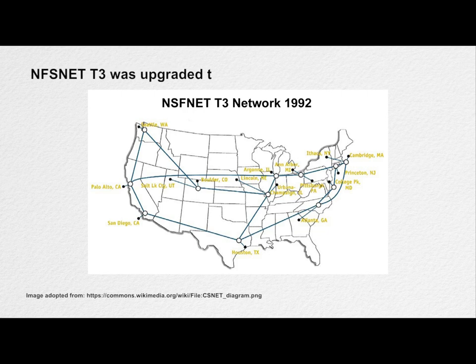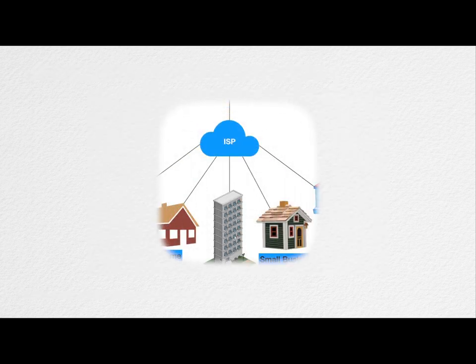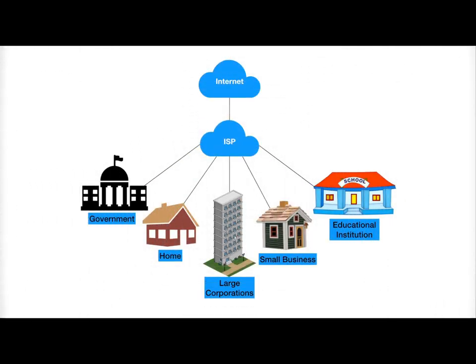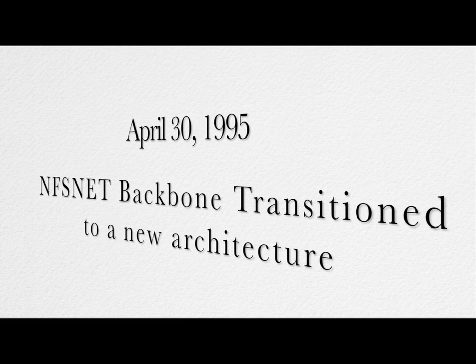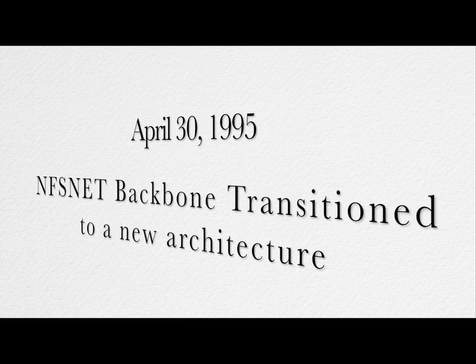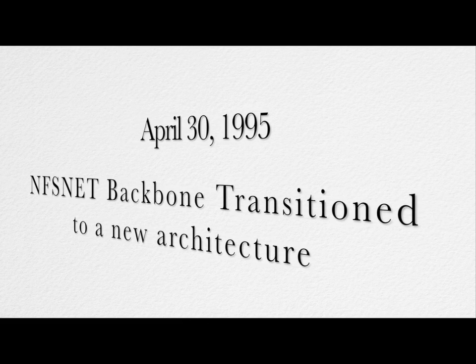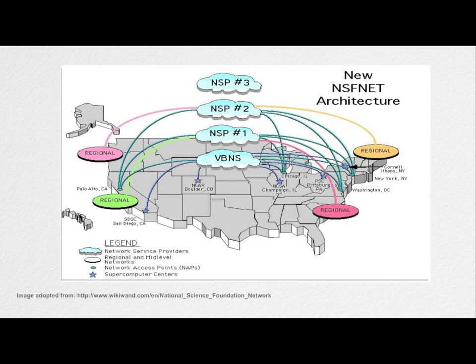By 1991, NSFnet was expanded and upgraded to 45 megabits per second. Many commercial ISPs provided backbone service and it became popular among corporates. On 30th April 1995, the NSFnet backbone service was successfully ported to a new architecture and the NSFnet backbone was decommissioned. Now the internet could carry commercial traffic.